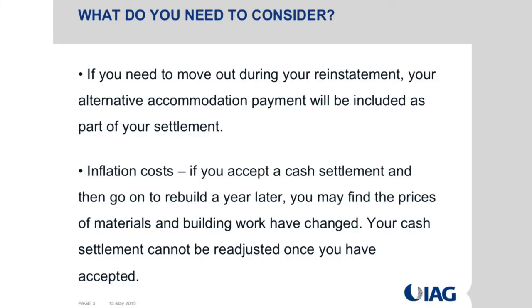If you need to move out during your reinstatement, your alternative accommodation payment is generally included as part of your settlement if you haven't used it before. Where it wouldn't be included is if you decided to cash settle and you are buying a new home that's already built and everything went smoothly, so you're not incurring alternative accommodation costs. So you would need to have a conversation with your insurer about what your intention is. I would encourage you to speak to RAS - the Residential Advisory Service - or your bank, and work through what a good outcome looks like before you enter into that negotiation process.